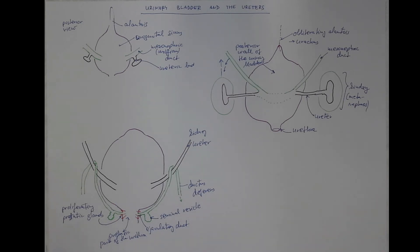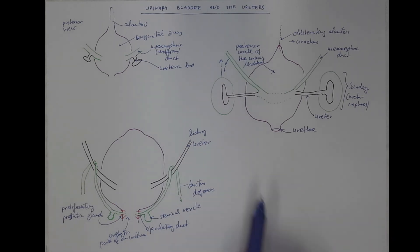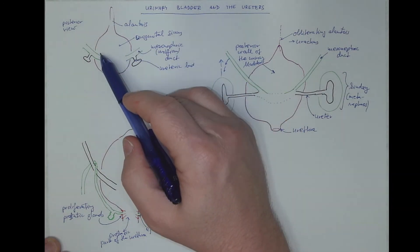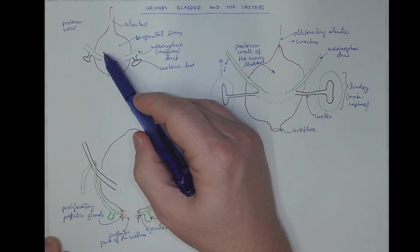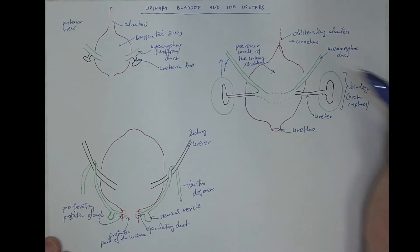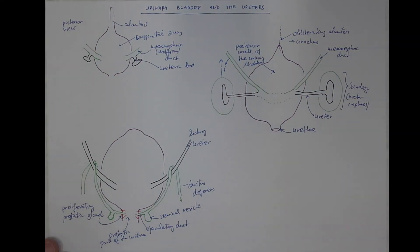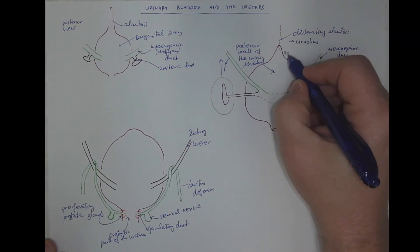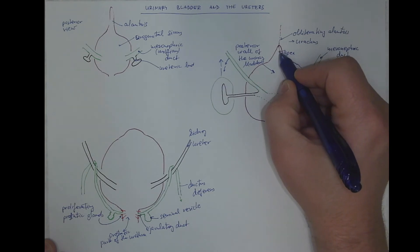Okay we got all the parts described. So we remember that the urinary bladder is made, is derived from the urogenital sinus and partly the allantois. This will be the apex of the bladder.